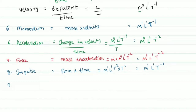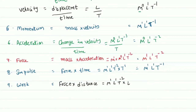Next is work. Work equals force into displacement. Force has dimensions M power 1, L power 1, T power minus 2, and displacement (distance) adds L power 1. So the dimensional formula for work is M power 1, L power 2, T power minus 2.